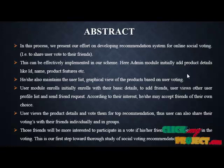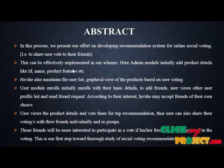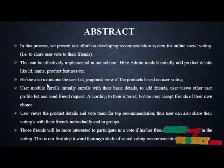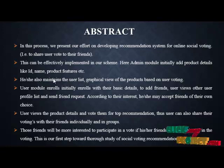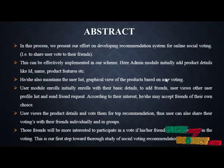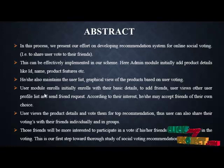The admin module initially adds product details like product ID, product name, and product features. For example, if we take a car product, we can include mileage, speed, brand name, company name, etc. Admin also maintains the number of users registered with the application, keeping a user list. Admin also views a graphical view of the product based on user voting, where the graphical representation is shown explicitly.